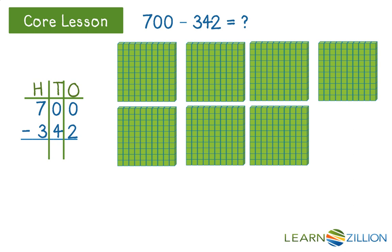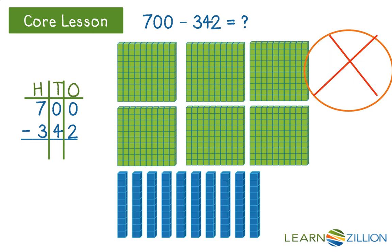Then, I'll put out 700 in base 10 blocks, so seven hundreds. Now, I know that I need tens and ones, so what I'll do is decompose the hundred flat to get some tens. So, one hundred flat decomposes or breaks apart into ten tens.